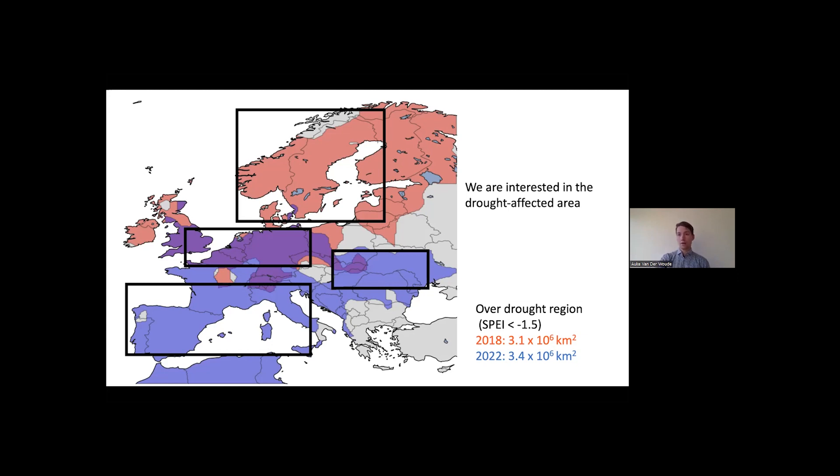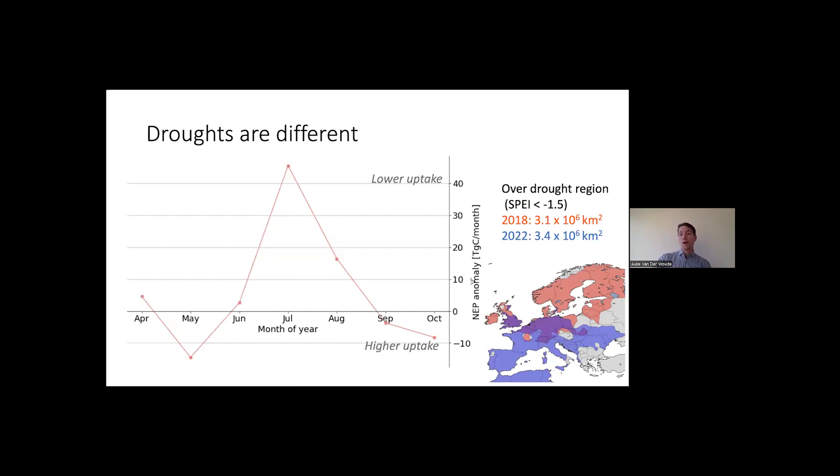So what do we see over this drought area? I'll show you here the anomaly of the Net Ecosystem Productivity. So the total ecosystem under the drought area has taken up, and if it's above zero, it's a lower uptake, below zero a higher uptake. And what you see, very interesting, in May we have an enhanced uptake, the enhanced spring uptake that we've already also talked about in the Smith et al. paper. And then here in June, July, there is a very strong response to a positive anomaly, a lower uptake.